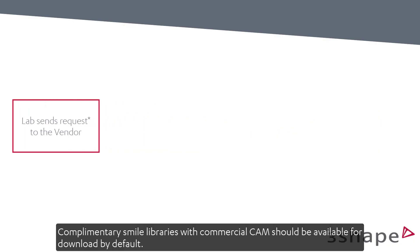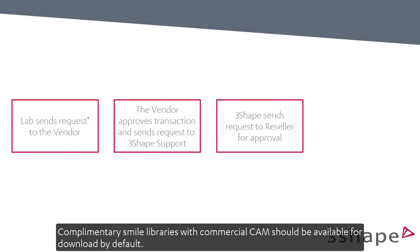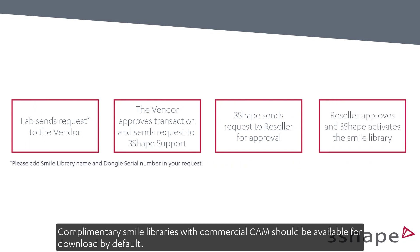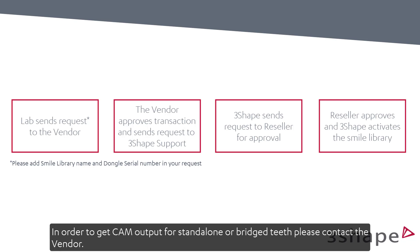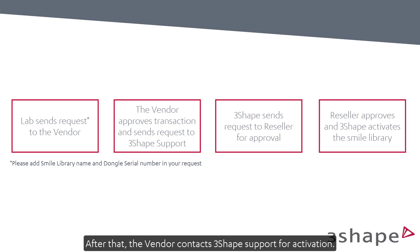Complementary smile libraries with commercial CAM should be available for download by default. If the library is not enabled, please send your dongle number with the library name to support@3Shape.com and we will make it available for you. In order to get CAM output for standalone or bridge teeth, please contact the vendor. After that, the vendor contacts 3Shape Support for activation.